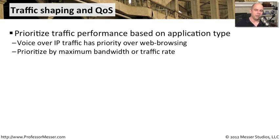This is called quality of service. We'll assign a different quality of service to voice over IP than we might to web browsing, file transfers, or streaming video. That way we can dial up the priorities of voice over IP so our voice communication will always work, and dial down the throughput that streaming media gets so it doesn't overwhelm the network.